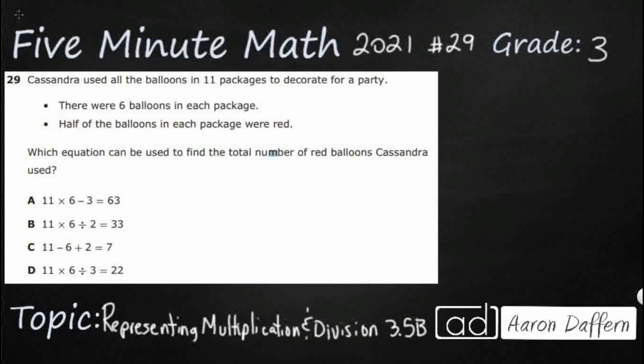So Cassandra is using all the balloons in 11 packages, so that is going to be helpful. Six balloons in each package, half of the balloons in each package were red, so we are looking for an equation for the total number of red balloons.